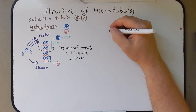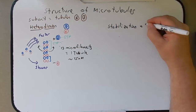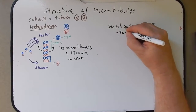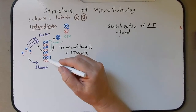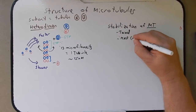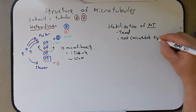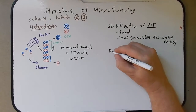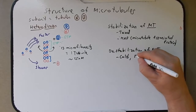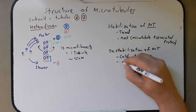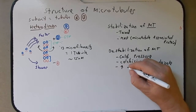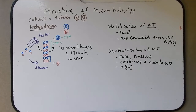Stabilization of microtubules: some drugs can do this, and a very important one is called Taxol — it stabilizes the microtubules so they cannot break down. They can also be stabilized by MAP proteins, which stands for microtubule associated protein. Microtubules can also be destabilized by cold temperatures, pressure, certain drugs like colchicine and nocodazole, and finally high concentrations of calcium.